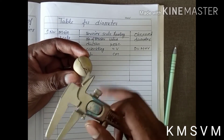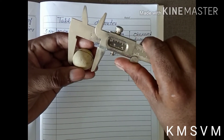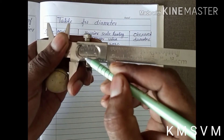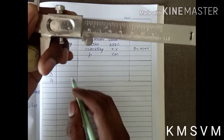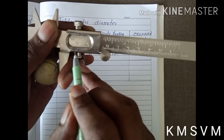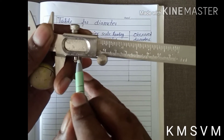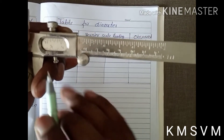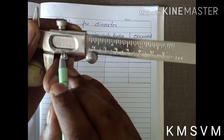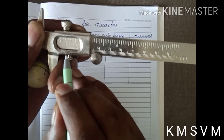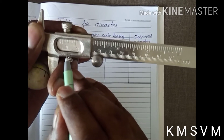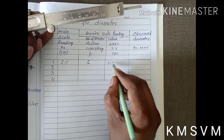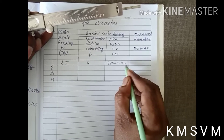Now, the table for the diameter of the object. Here we have a spherical body. The main scale reading is 2.5 cm, and the number of vernier scale coinciding divisions are counted: 1, 2, 3, 4, 5, 6. So 6 into least count equals 6 × 0.01 = 0.06 cm.